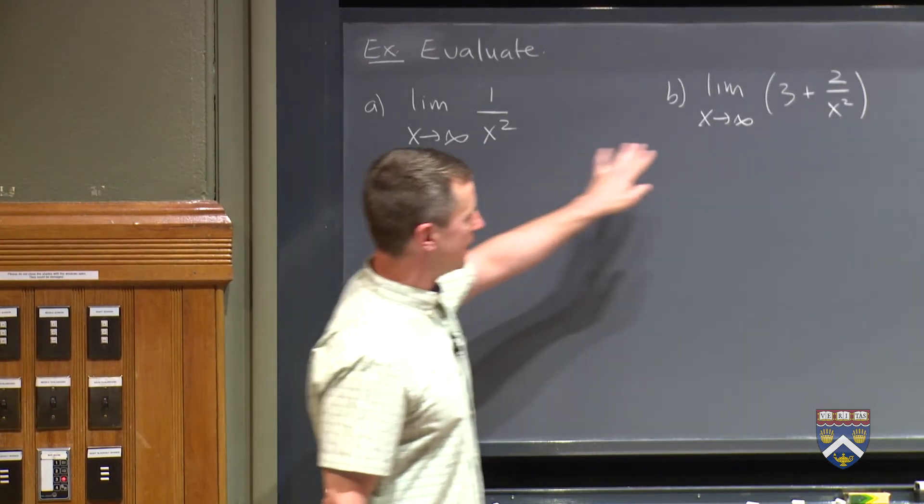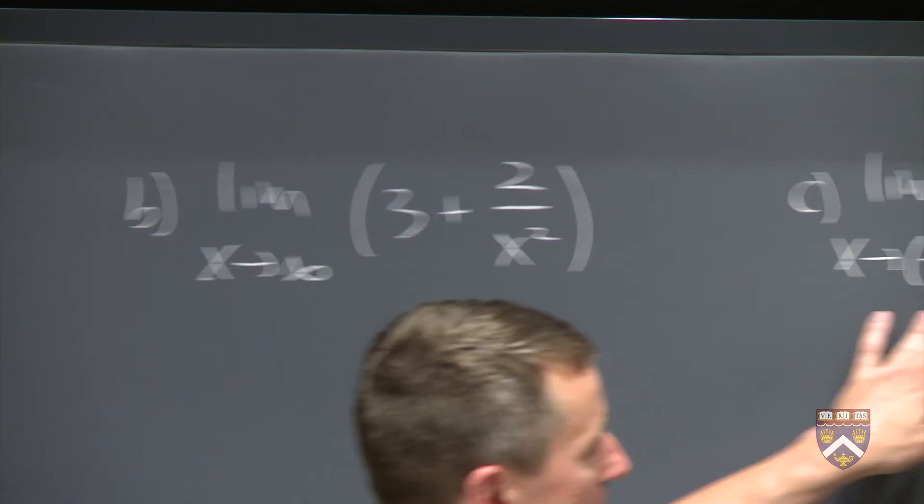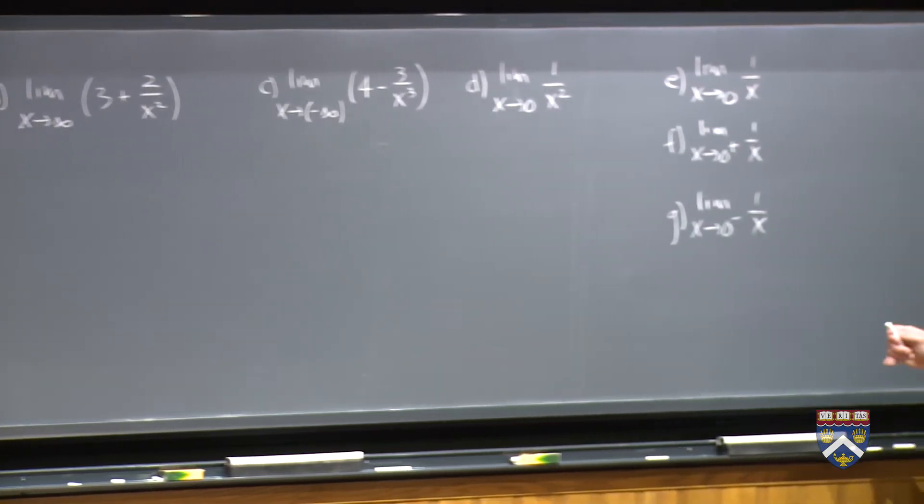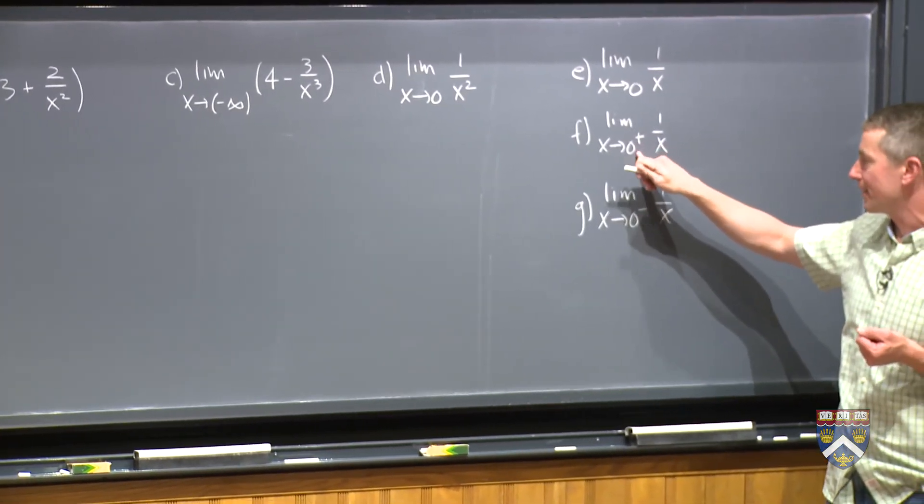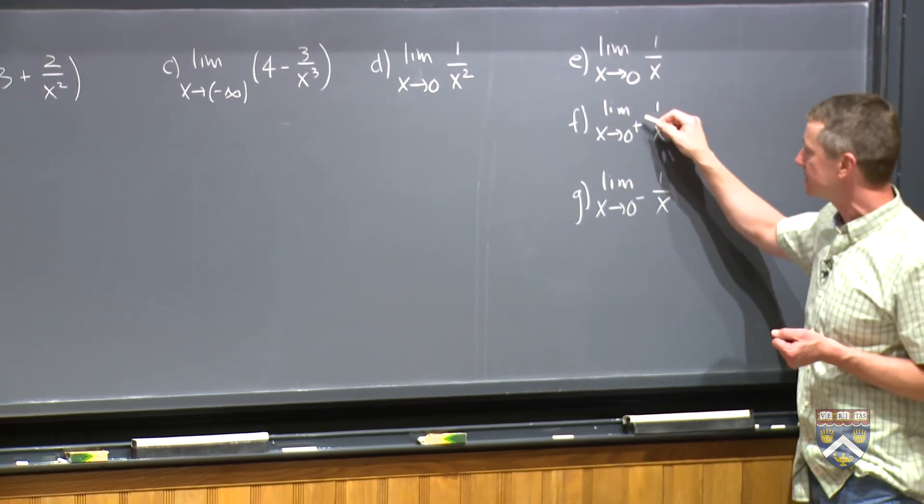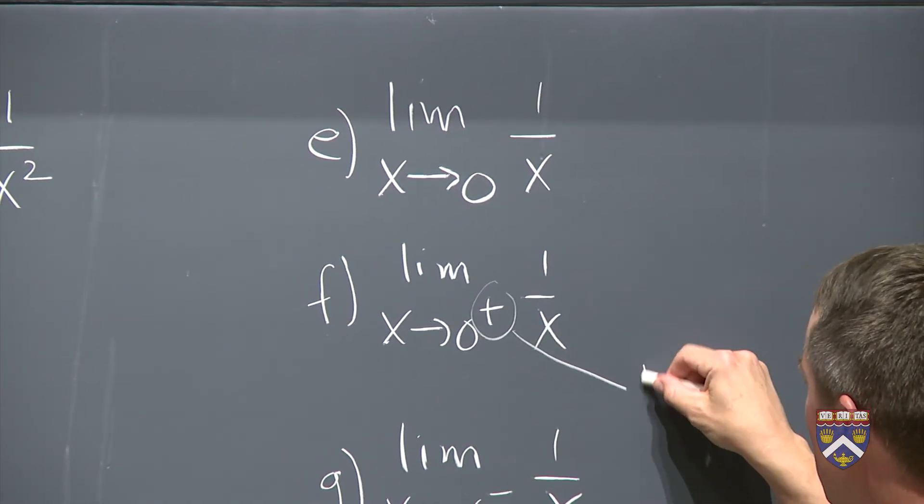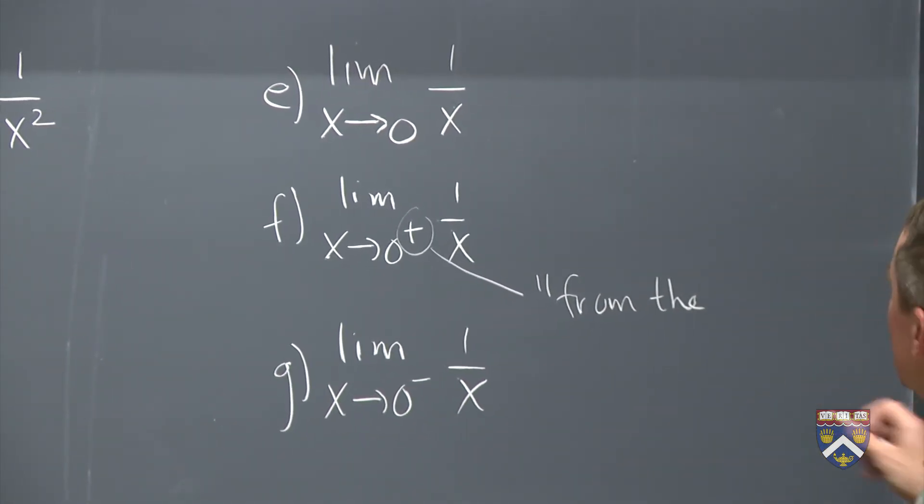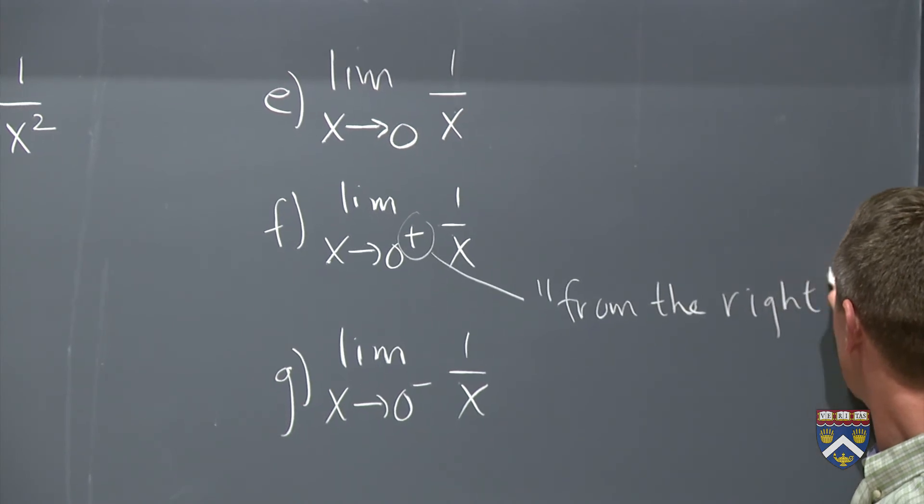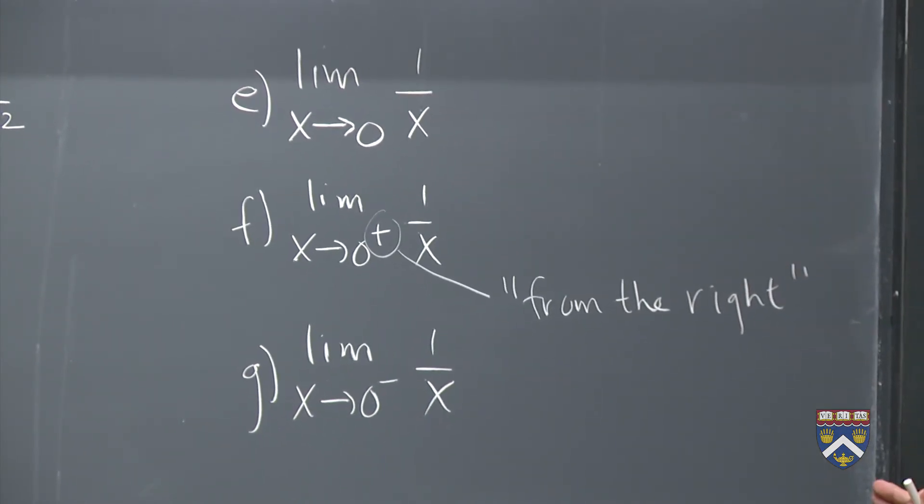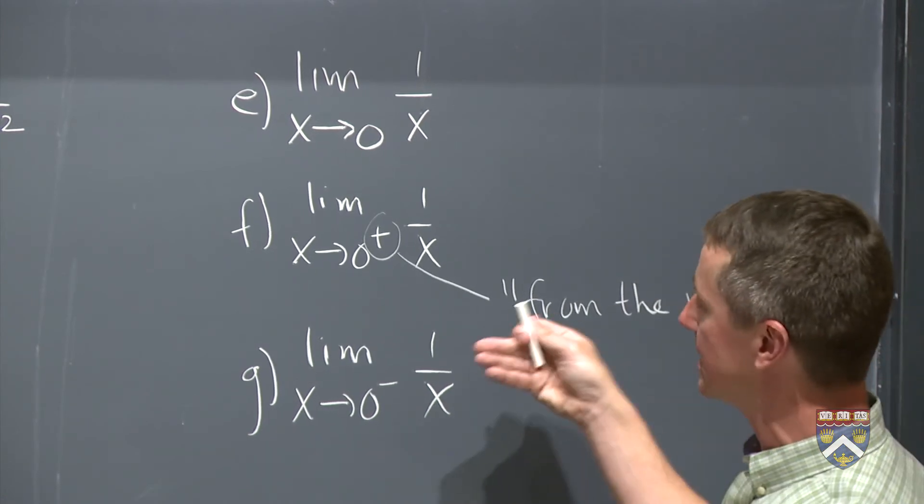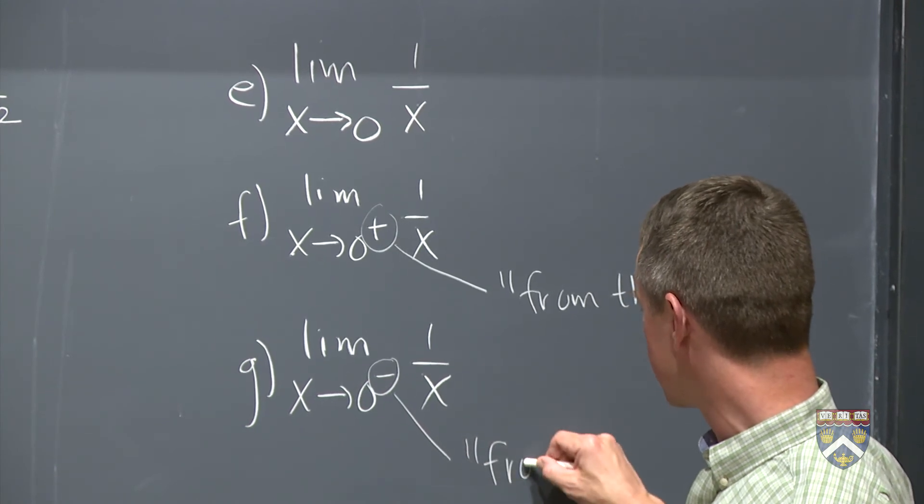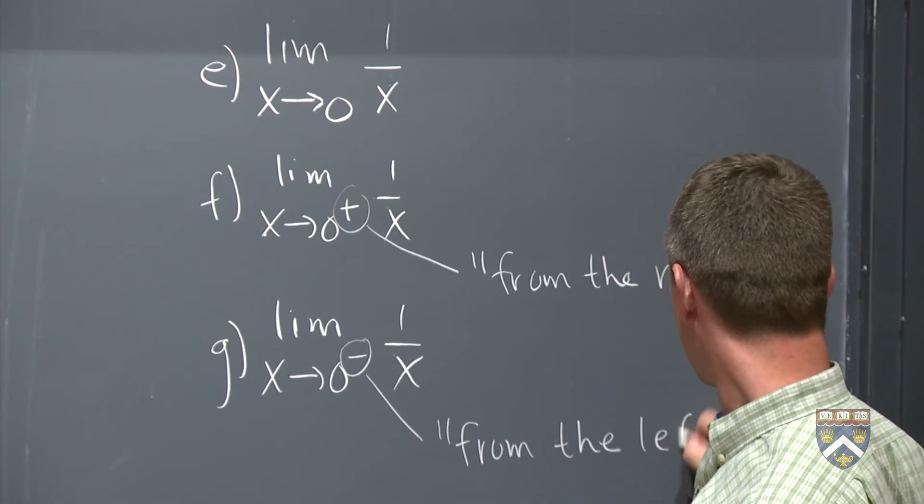One over x squared as x goes to infinity; this function as x goes to infinity; here x is going to negative infinity; here x is going to zero. And if you haven't seen this notation before, when I write zero with a superscript plus like this, we read this as you're approaching zero from the right, meaning the right side of the graph, because on the right side of zero is where the positive numbers live. So we're approaching zero from the right side. And as you can probably guess, this negative sign means that we are approaching zero from the left.